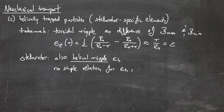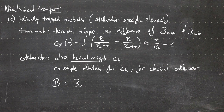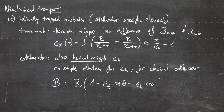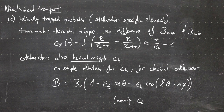However, for a classical stellarator, we can estimate and implicitly define it as follows. One can implicitly define it via the magnetic field B being equal to B₀ times (1 minus the toroidal ripple times cosine of the poloidal angle minus ε_H times cosine of m times φ). Usually, the toroidal ripple is smaller than the helical ripple, which is smaller than one.